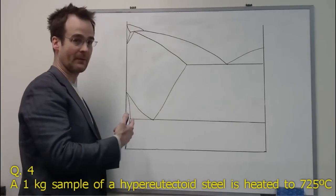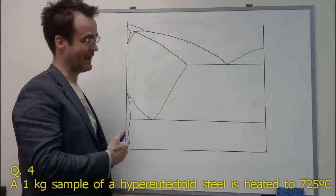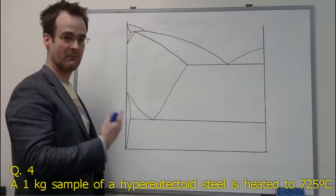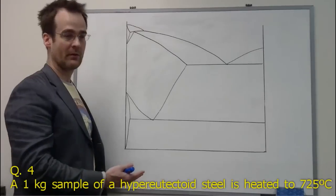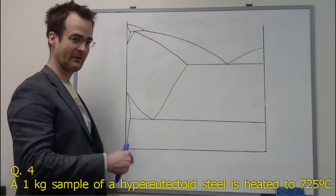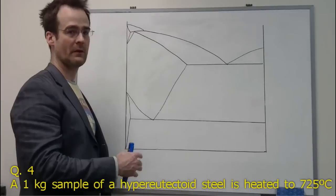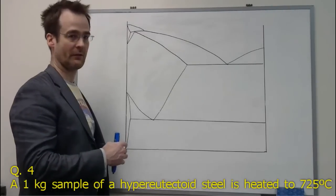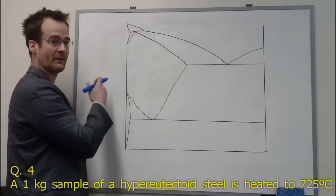So I've sketched up the iron carbon phase diagram and, of course, on the exam, the axes would be labeled and the compositions and temperatures would be indicated as well. Let's just start off as a quick review by drawing those on ourselves. So first of all, we've got the temperature axis.